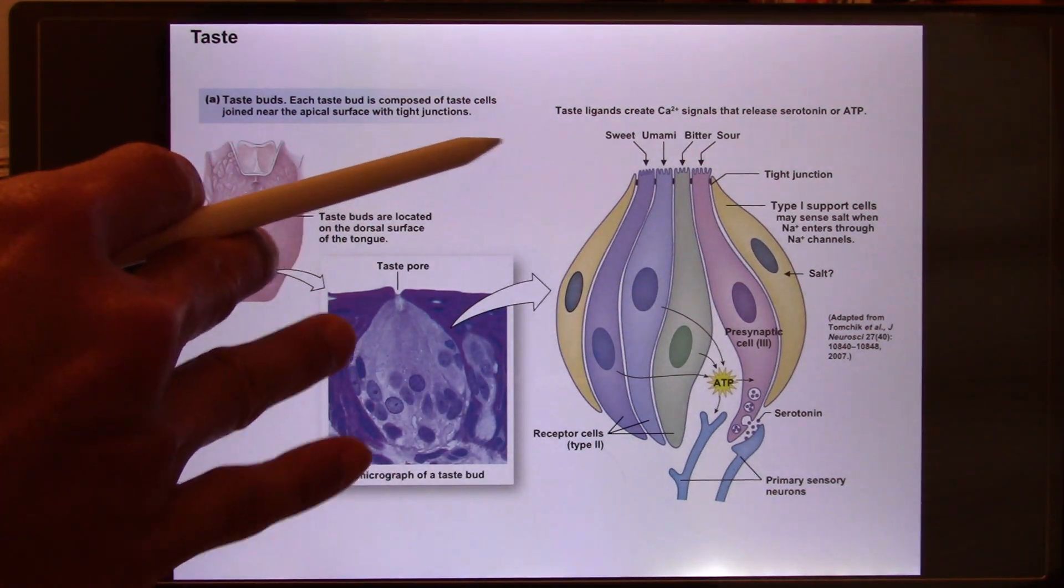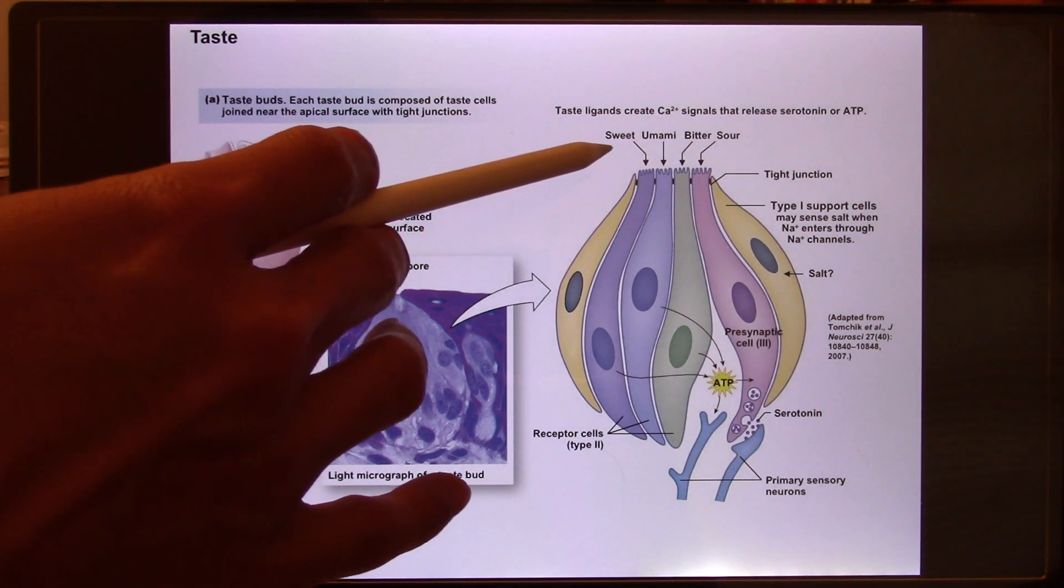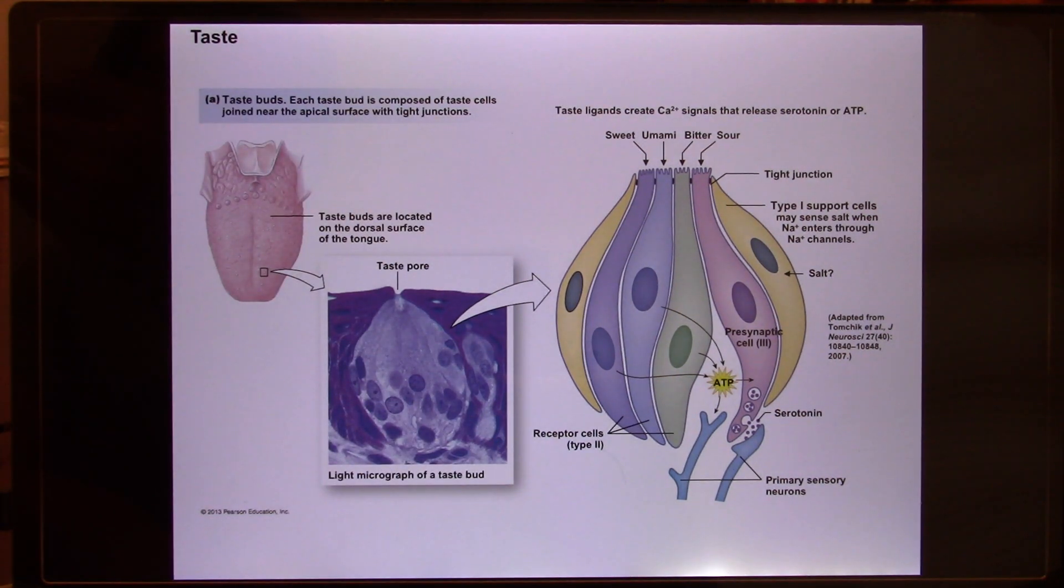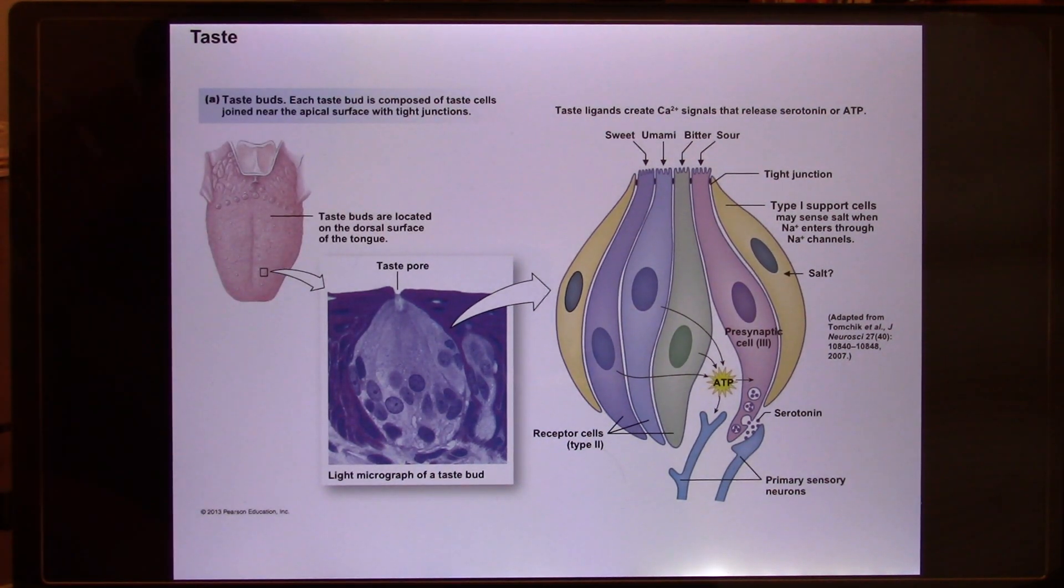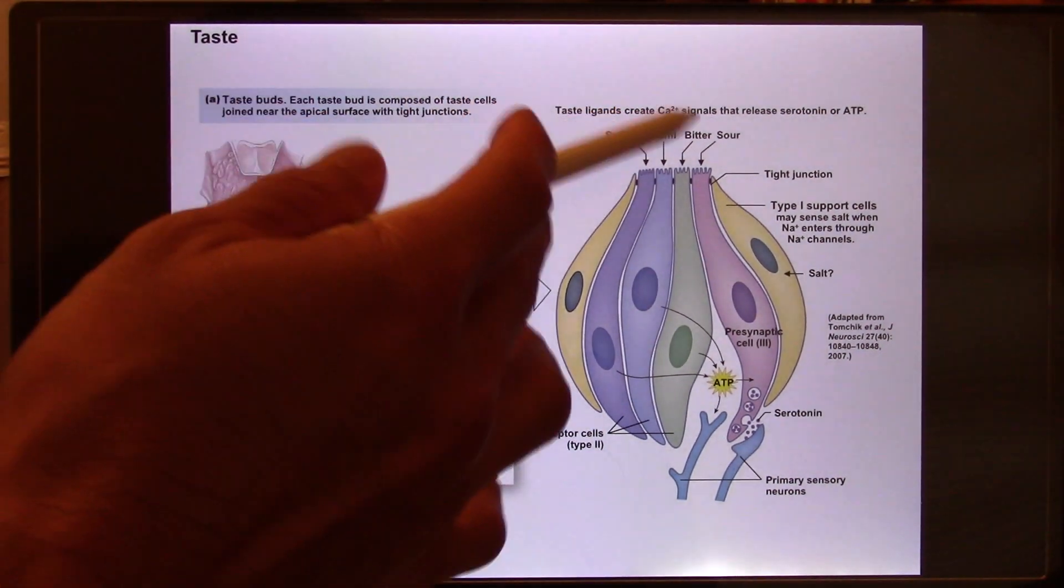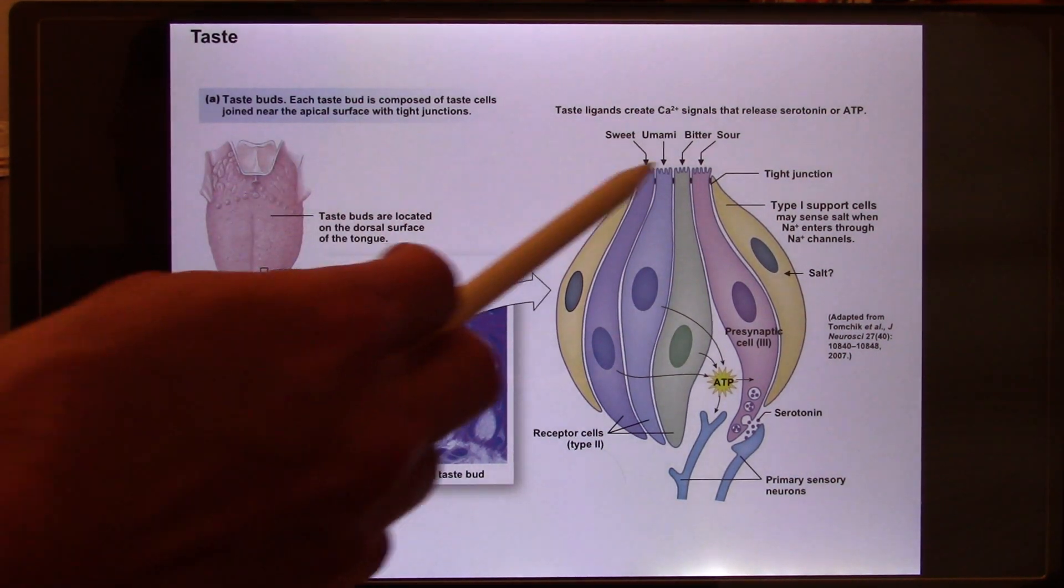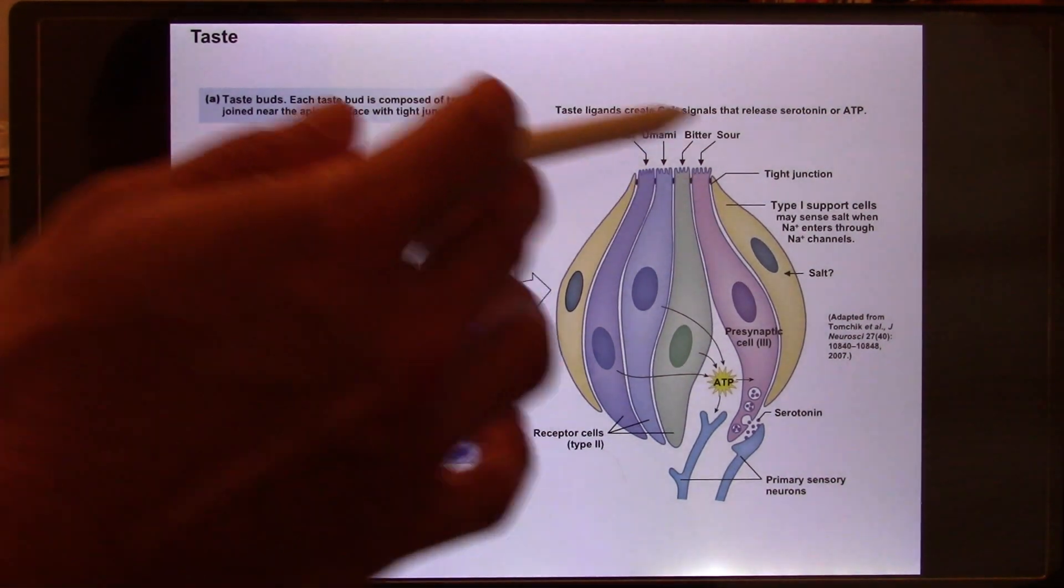And the taste bud, let's look at the taste bud. You have five different flavors. Sweet, sour, bitter, salty. That's the traditional one. Plus one, umami. Umami is a savory flavor. The meat broth, you have umami. And also if you like sashimi. Why it tastes so good? Because those fresh seafood has a lot of umami. It's glutamate. And also MSG. MSG is the artificial one.